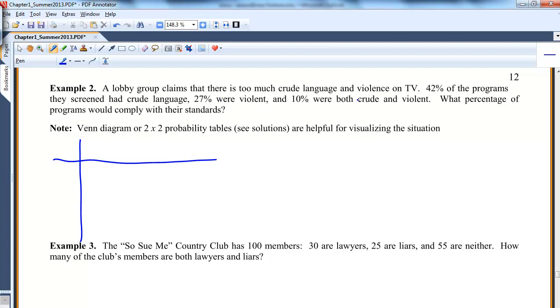A lobby group claims there is too much crude language and violence on TV. 42% of programs screened had crude language, so probability of crude language is 0.42. And 27% were violent, so probability of violent is 0.27. And probability of both, so crude language and violent - that's intersection - is 0.10. And then my table,